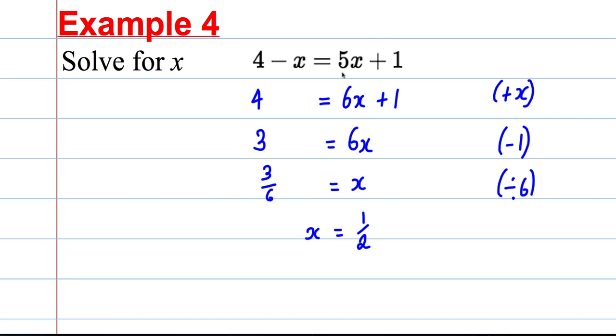Now let's check this is actually true. Let's underline our answer for the examiner. 4 take away a half is 3.5. 5 times a half is 2.5 plus the 1 would be 3.5. So we know we've done it right. That's our check.